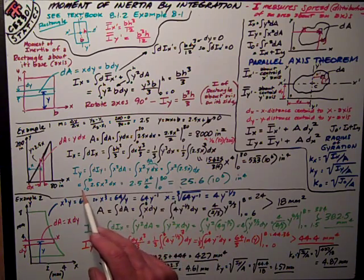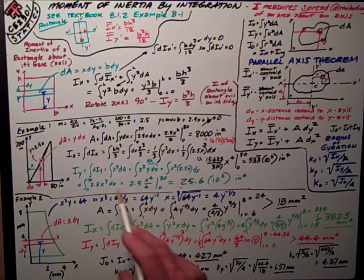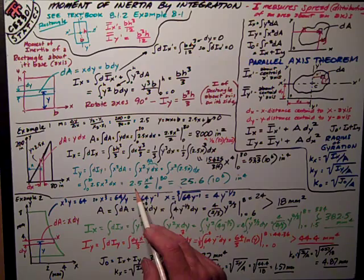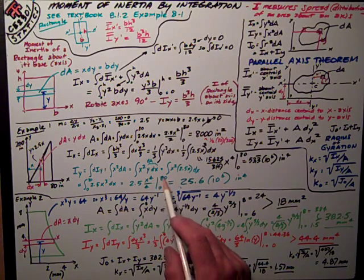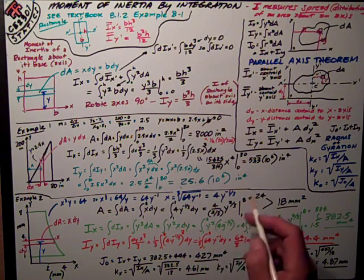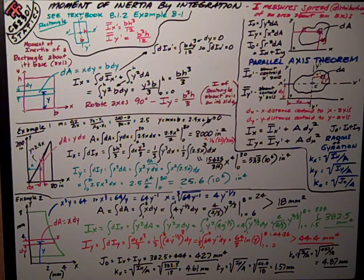I get 2.5x³, combining those terms. Evaluate that as an integral from 0 to 80, I get 2.5x to the fourth over 4. Evaluate it at 0 and 80, I get 25.6 times 10⁶ inches to the fourth. Now I didn't do it, but I could get the radius of gyration there.